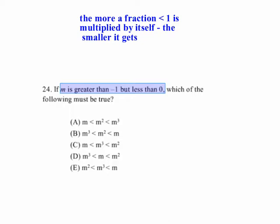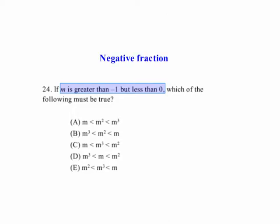And we're given that this is a negative fraction greater than negative 1, so it would be a negative fraction like negative 3 fourths, negative 1 half, negative 1 third. So we've got two things to consider here. We've got to remember that when we multiply a fraction by itself, it gets smaller.